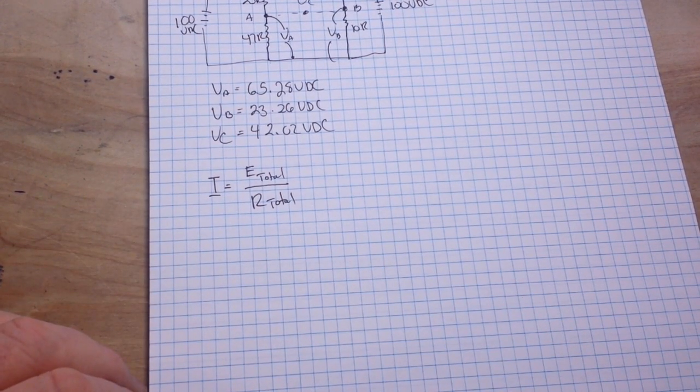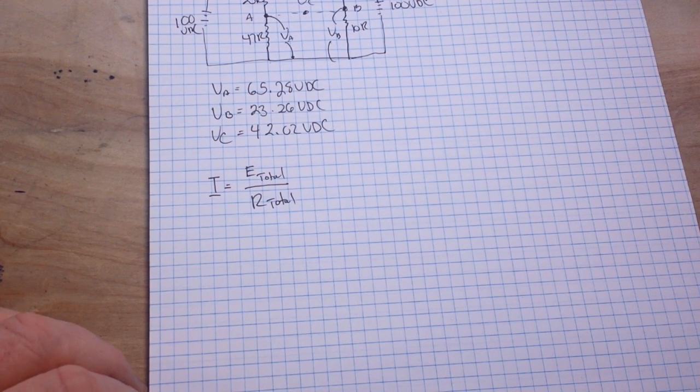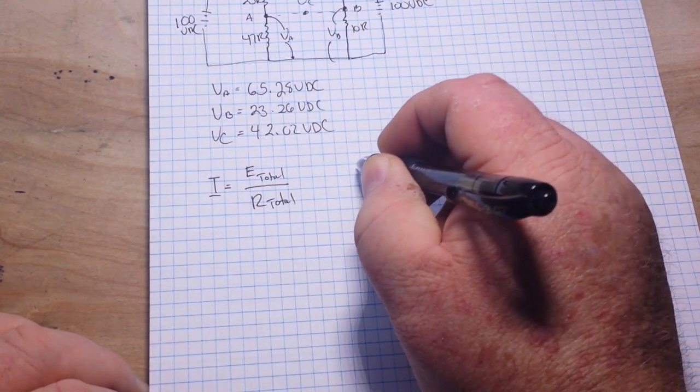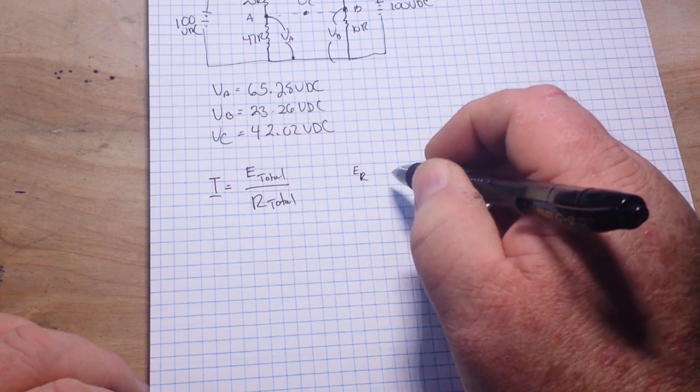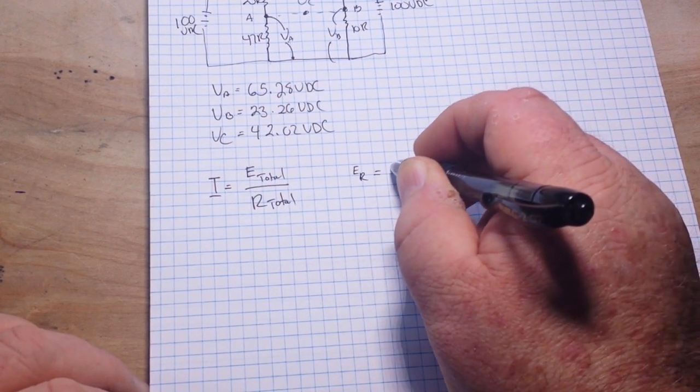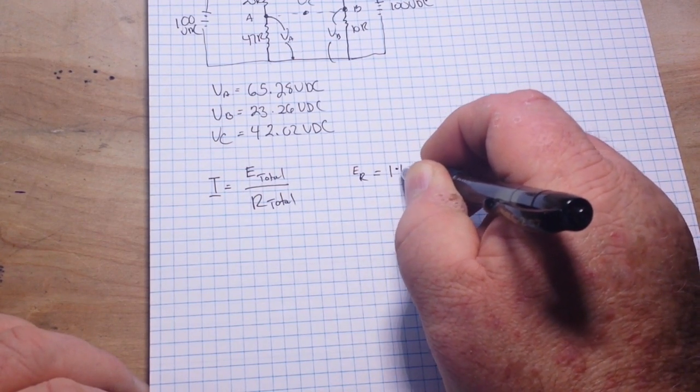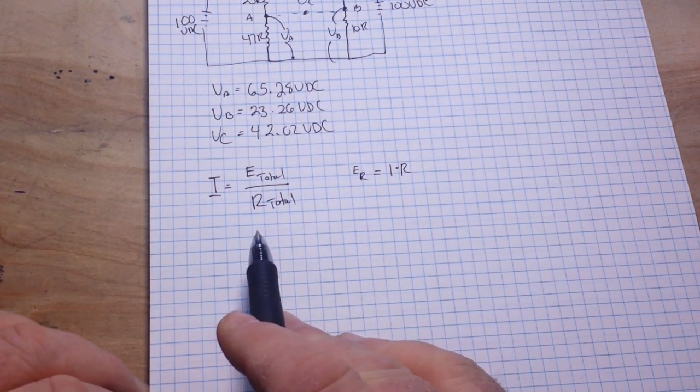So, we know by Ohm's Law and also by Kirchhoff's Law, more importantly, that the voltage dropped across any resistor in the circuit may be calculated by saying ER is equal to I times R. Okay?